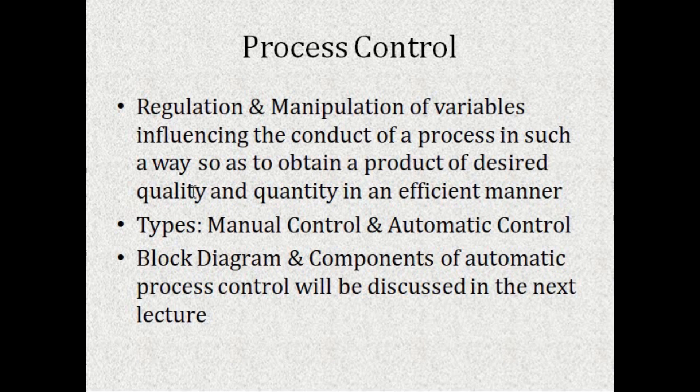That means, there are certain variables which we regulate or manipulate in such a way that the product we obtain should be of desired quality and desired quantity. The types of process control are manual control and automatic control. Manual control is not used in industry anymore.